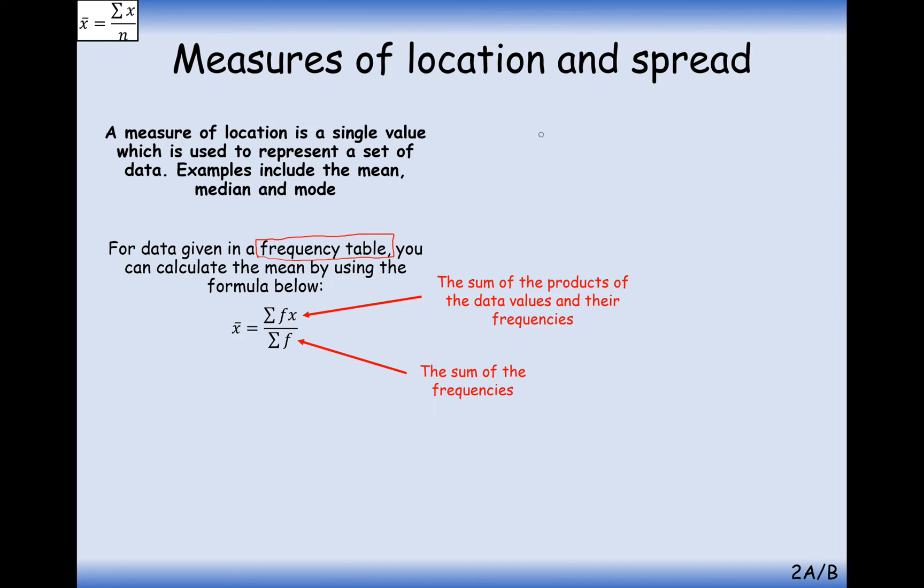So it's the value in the data column times by the frequency column, and then we create a third column, remember, and we add all of those up. And then divide that by the sum of all the frequencies in each data group. That would just be effectively the same as n, the total amount of bits of data.